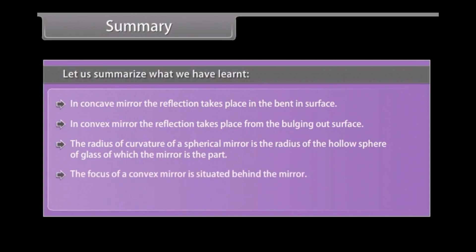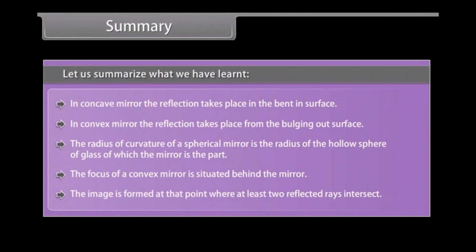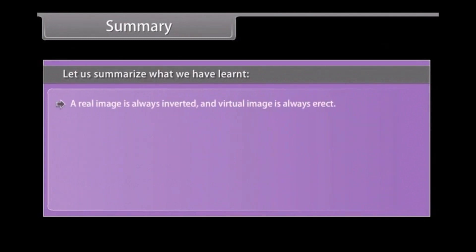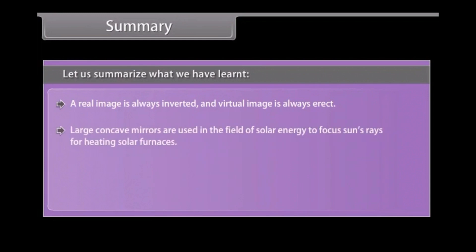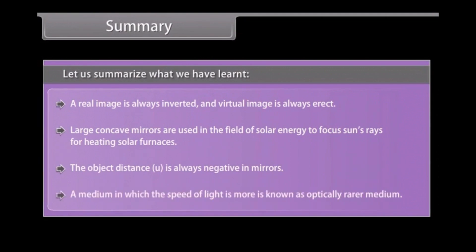The focus of a convex mirror is situated behind the mirror. The image is formed at the point where at least two reflected rays intersect. A real image is always inverted, and a virtual image is always erect. Large concave mirrors are used in the field of solar energy to focus the sun's rays for heating solar furnaces. The object distance U is always negative in mirrors. A medium in which the speed of light is greater is known as an optically rarer medium.